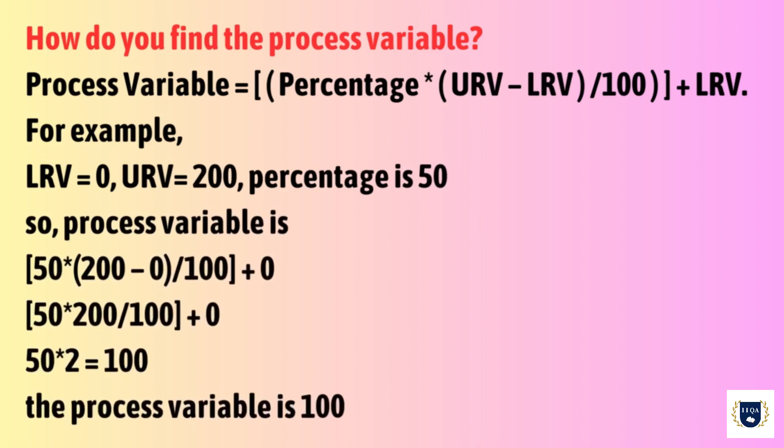For example, LRV equals 0, URV equals 200, percentage is 50. So, process variable is 100.